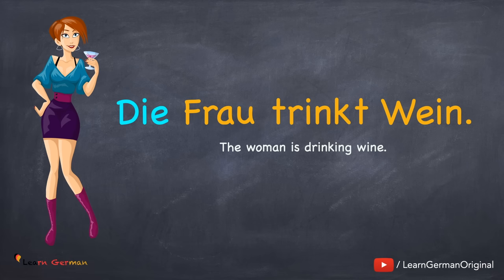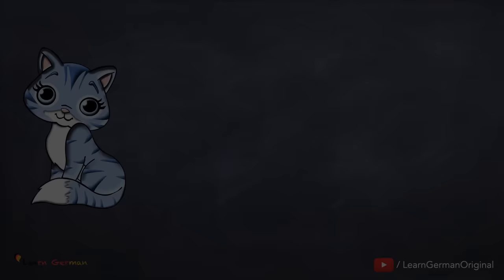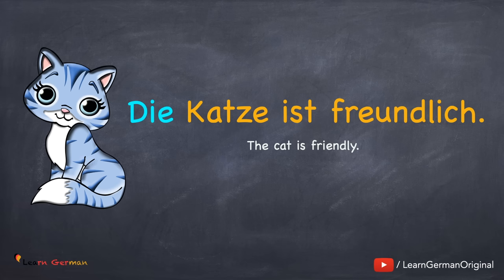Let's come to the next article. Die Frau trinkt Wein. Here, the article is die. Die Katze ist freundlich. Here again, the article is die. The article die is feminine.